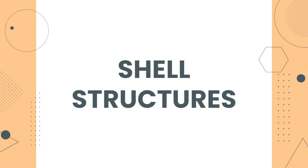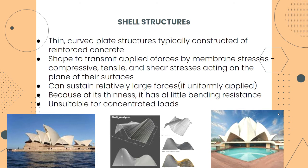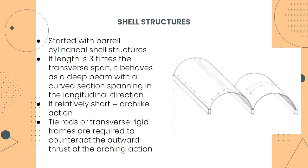Shell structures are thin curved plate structures typically constructed of reinforced concrete, shaped to transmit applied forces by membrane stresses — compressive, tensile, and shear stresses acting on the plane of their surfaces. They can sustain relatively large forces if only uniformly applied. Because of their thinness, they have little bending resistance and are unsuitable for concentrated loads. Here we have pictures of great examples of shell structures made with reinforced concrete.